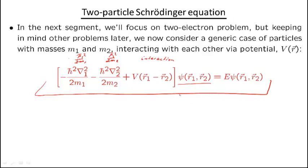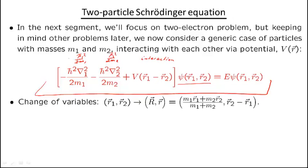The goal is to show that instead of solving this complicated differential equation depending on two vectors R1 and R2, we can reduce it to a single-particle Schrödinger equation we already know how to solve. To do this, we change variables: from coordinates R1 and R2 to capital R — the center of mass — and lowercase r — the relative distance between the particles R1 and R2.